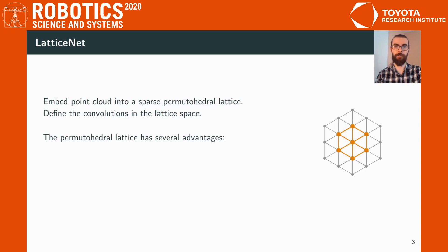The permutohedral lattice has several advantages as a representation. First, it has sparse storage, which means the lattice is only allocated where the surface of interest exists. Secondly, it has linear growth with respect to dimensionality, compared to the exponential growth of a cubical lattice. Thirdly, it also has less quantization issues due to the fact that the signal is interpolated into the lattice.